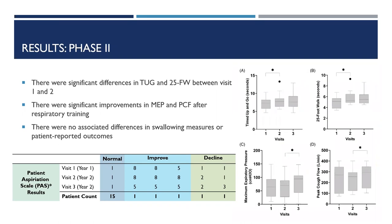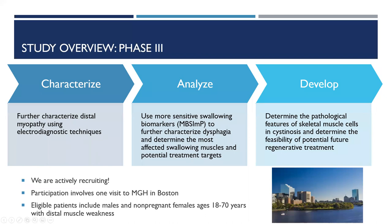There were significant changes in the timed up-and-go and the 25-foot walk between visits one and two, suggesting progression of weakness over a one-year period. There were significant improvements in maximum expiratory pressures and peak cough flow after respiratory training, suggesting that muscles experiencing weakness may be responsive to targeted intensive exercise to improve function. There were no associated differences in swallowing measures or patient-reported outcomes, suggesting that our assessment techniques were not sensitive or specific enough to capture change over time, or that these changes are happening more slowly.